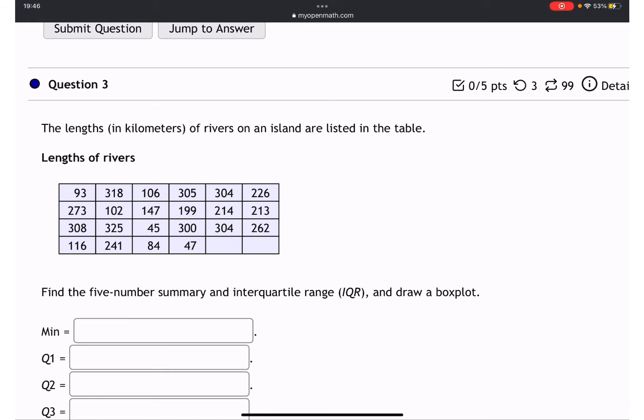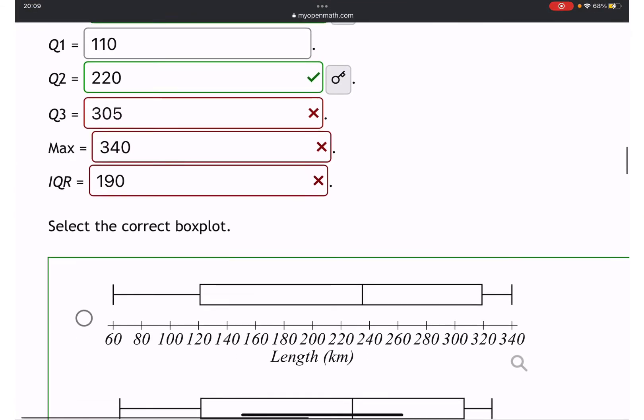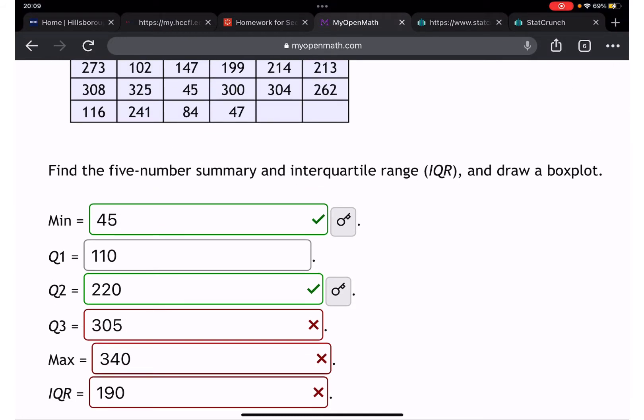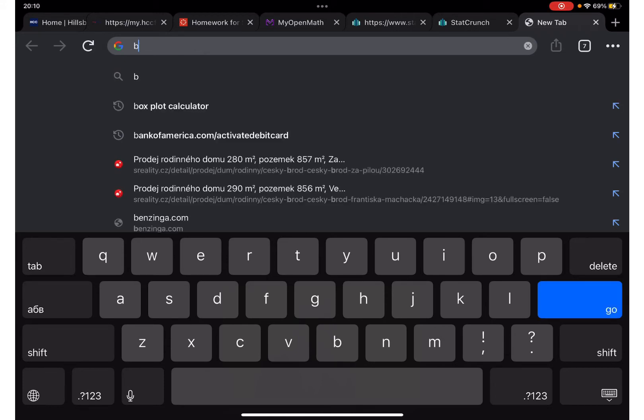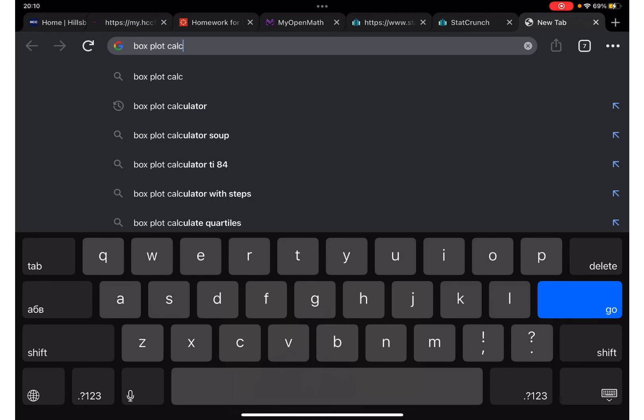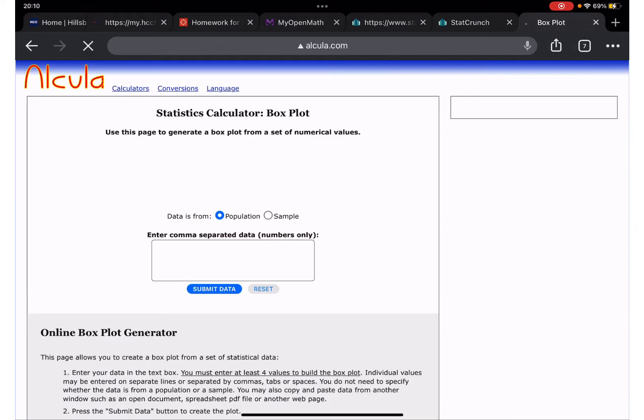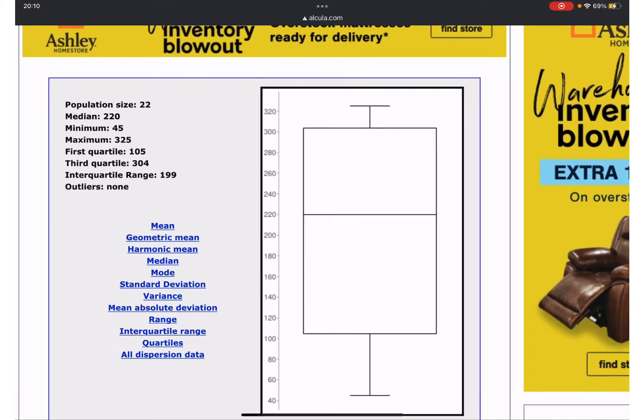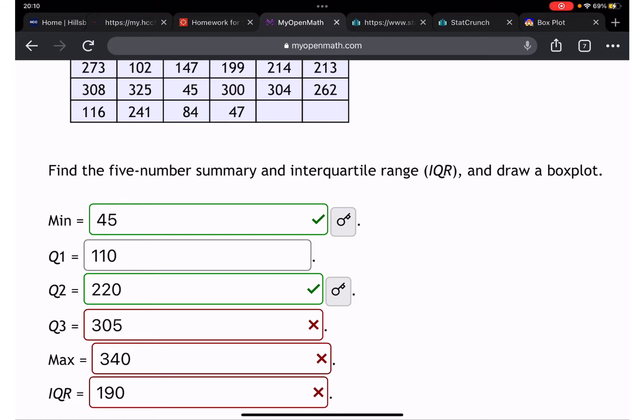Here we are going to use stat crunch. Since it doesn't give us precise value, we have to guess approximately. I tried twice and I got wrong number. So I will find a calculator that will give me box plot data. Let me put box plot calculator. I will take this one and place it underneath the video.